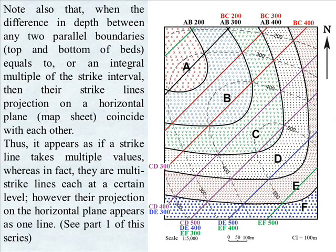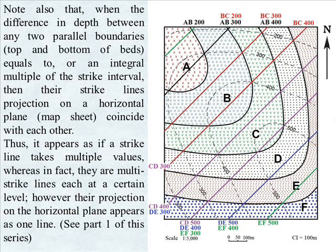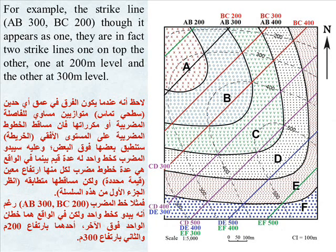Note also that when the difference in depth between any two parallel boundaries equals or is an integral multiple of the strike interval, their strike lines' projection on a horizontal plane coincide with each other. Thus, it appears as if a strike line takes multiple values, whereas in fact they are multiple strike lines each at a certain level — their projections on the horizontal plane appear as one line. For example, the strike line AB 300 and BC 200, though appearing as one, are in fact two strike lines — one at the 200-meter level and the other at the 300-meter level.